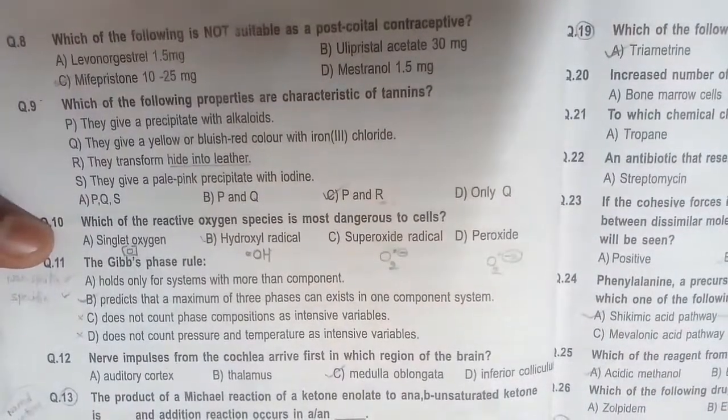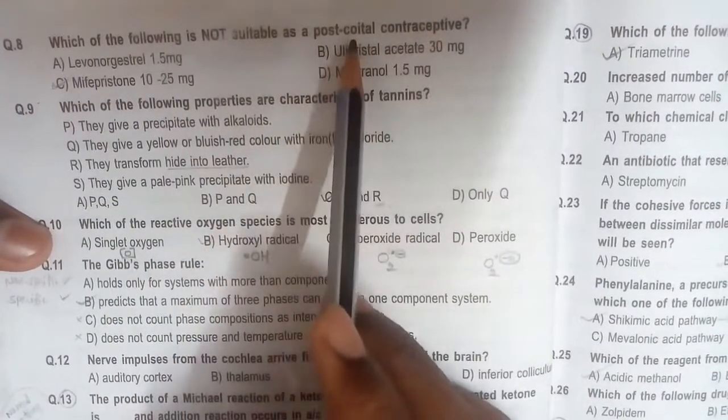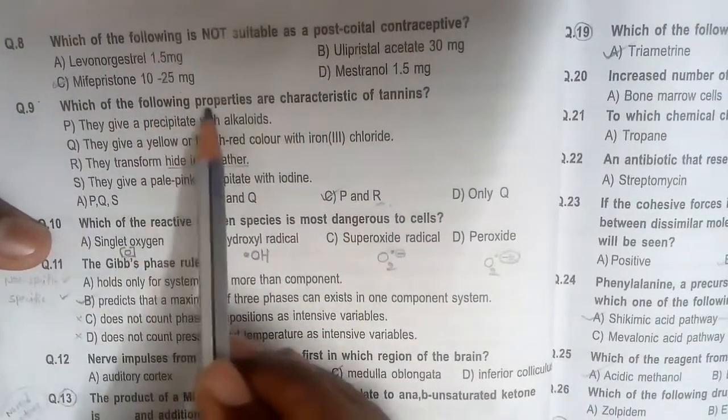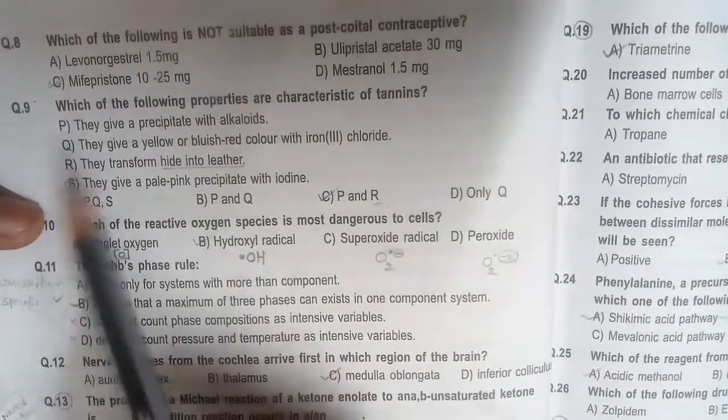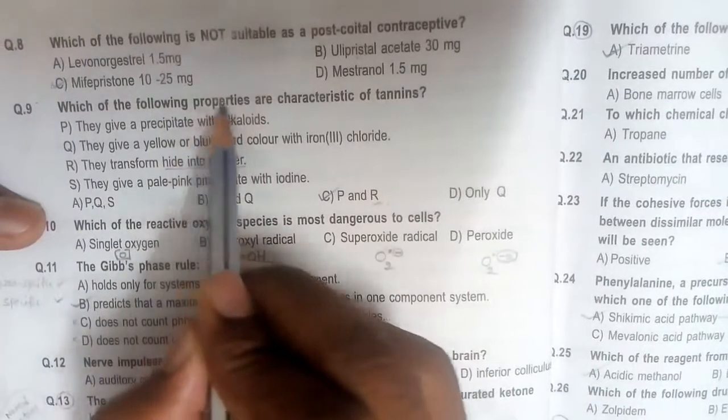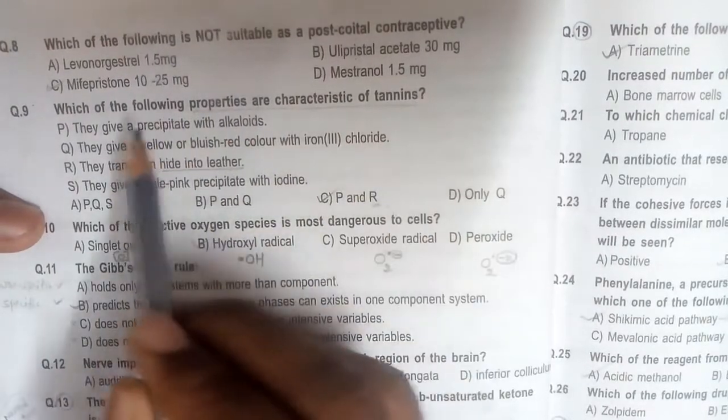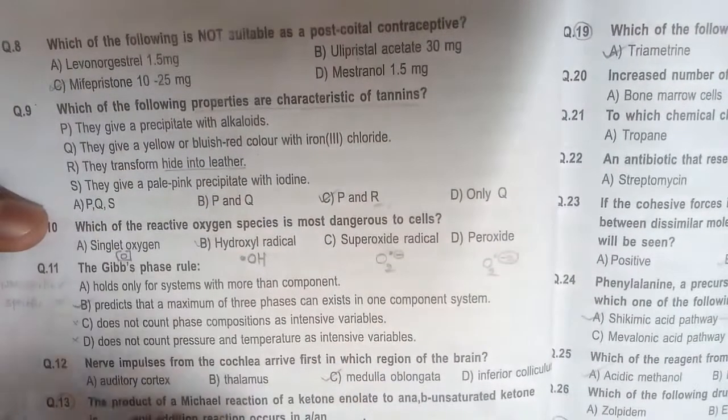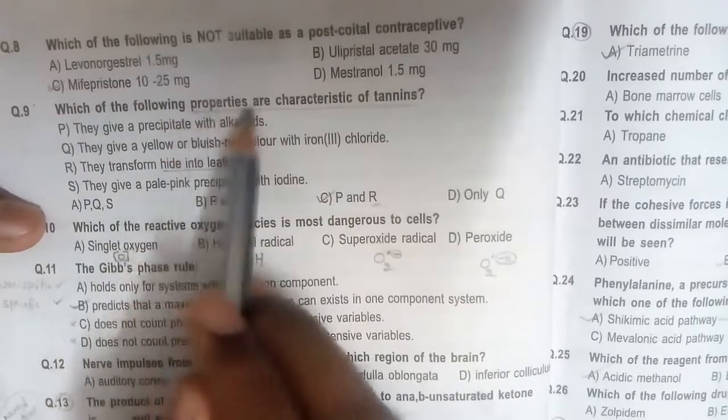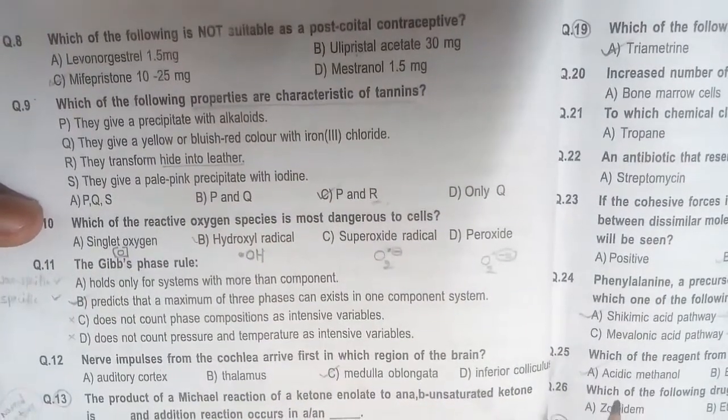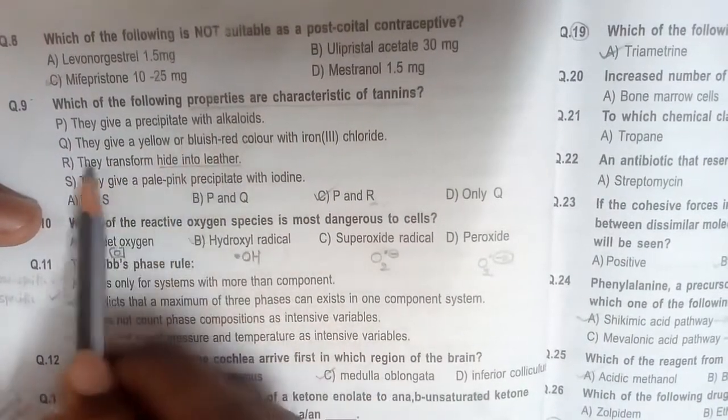Which of the following properties are characteristic of tannins? This question indicates the properties of tannins versus carbohydrates, volatile oils, and resins. You have to focus on this. The properties are mainly two: they give precipitate with alkaloids and they transform hide into leather. You have to learn this.